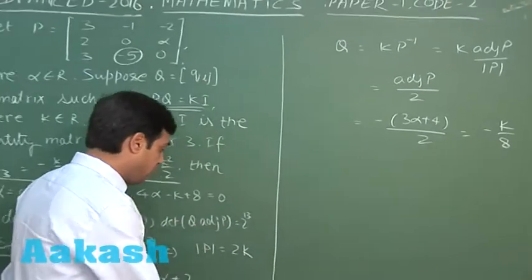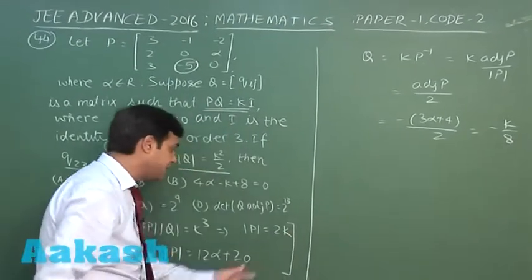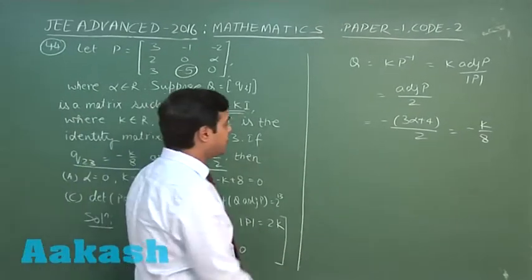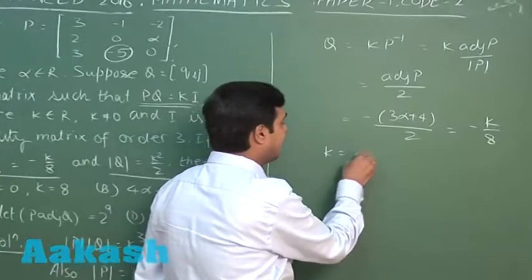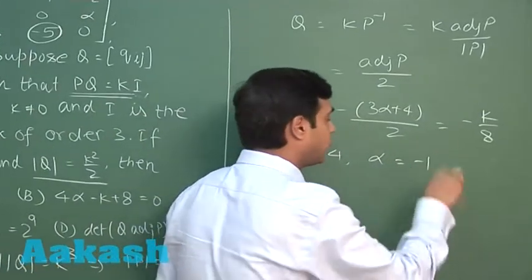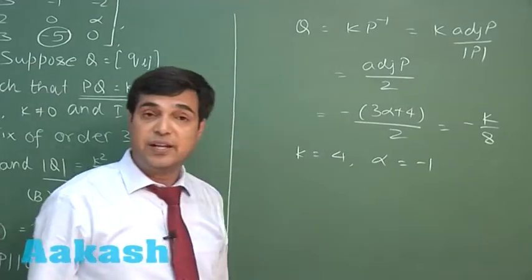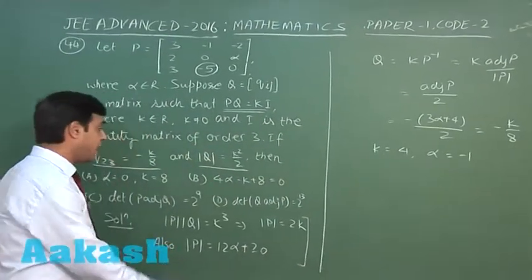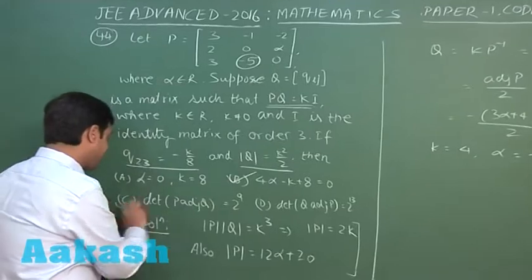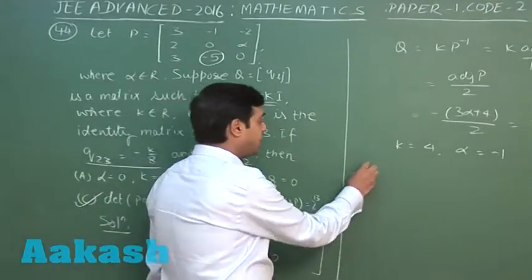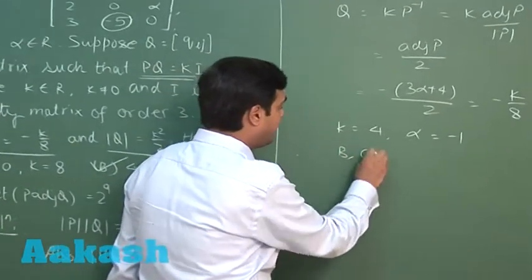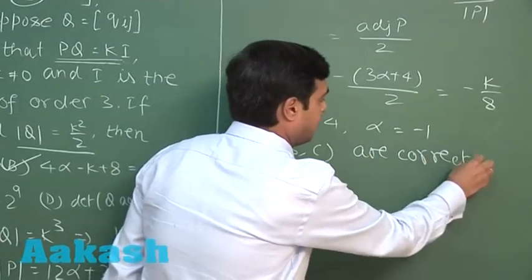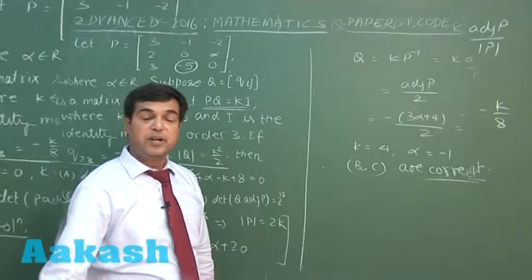Previously we obtained 2k = 12α + 20. Solving these two equations simultaneously, we get k = 4 and α = -1. We can then obtain det(P), det(Q), and whatever else is required. The correct options are B and C.